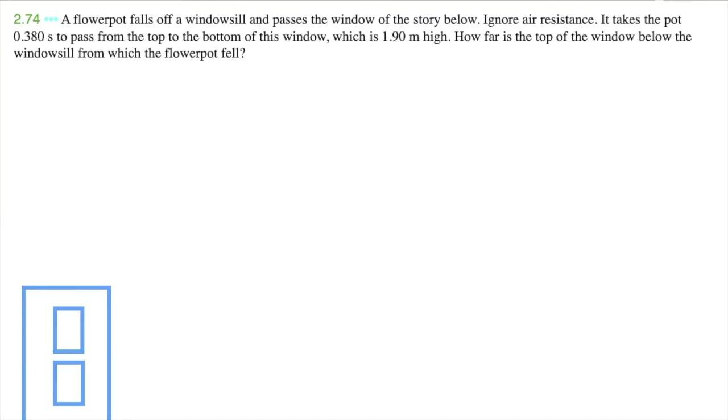And it takes the pot 0.380 seconds. And the distance from the top to the bottom of the window is 1.90 meters. So for this range or this window, it takes this flower pot 0.380 seconds to travel through it. And the distance it travels is 1.90 meters.